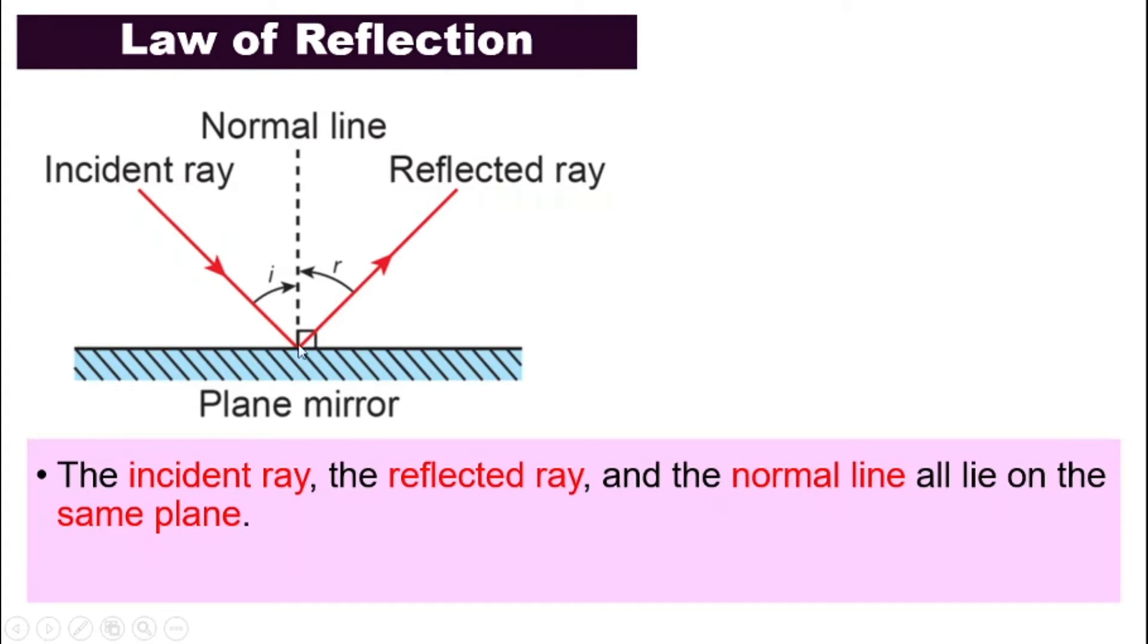What is incident ray, normal line and reflected ray? Let's look at the rays first. Incident ray is the light that is coming, the light that is original, the source of light. The incident ray is the one that is shining towards the mirror.